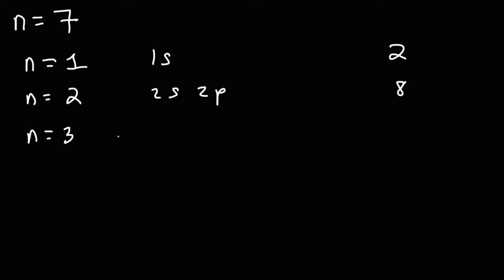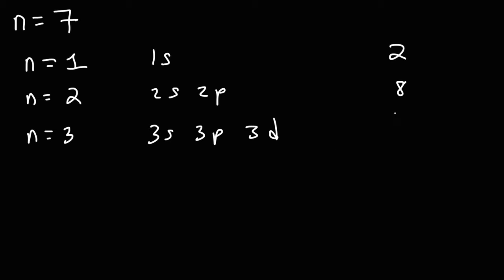In the third energy level, there are 3 sublevels: 3s, 3p, and 3d. d can hold up to 10. So if you add 8 plus 10, you get a maximum of 18 electrons in the third energy level.